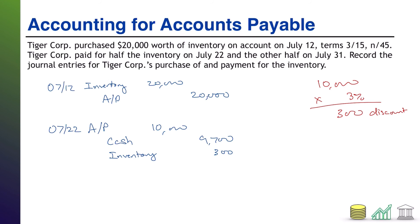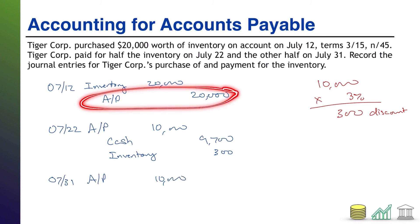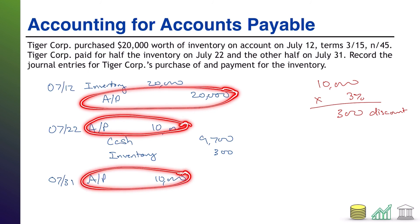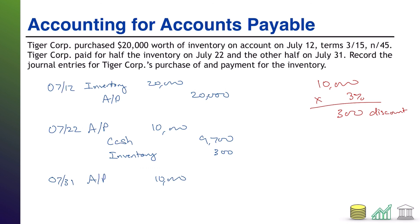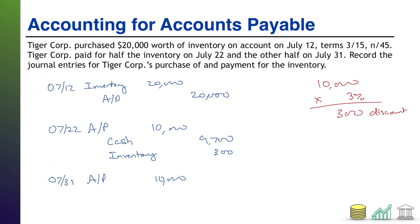Our last journal entry is July 31st — we pay off the other half of the balance: debit AP $10,000. Notice we established a $20,000 liability; on July 22nd half went away, and now the other half goes away. But this time, remember we purchased on the 12th and it is now the 31st — that is 19 days later. We are outside the 15-day payment window, and therefore we do not get to take a discount. We hand over the full $10,000 in cash.